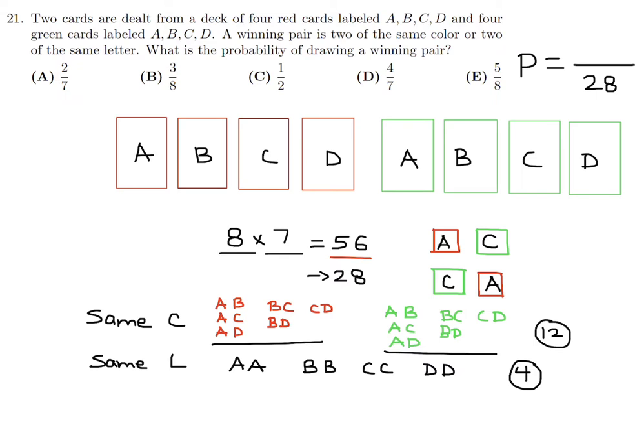The total number of winners is four (same letter) plus twelve (same color), which is sixteen. The probability is 16 over 28. Reducing to lowest terms, divide top and bottom by four: four over seven. Number 21, the answer is D.